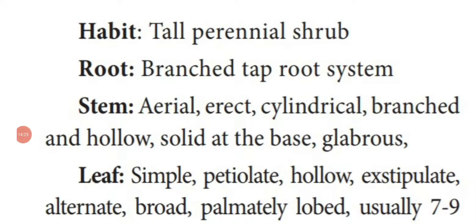Habit: It is a tall perennial — that is more than 2 years lifespan — shrub plant. Root: taproot system, because it is a dicot family. Stem: aerial, above the ground level, erect, cylindrical in shape, contains many branches. The stem is hollow — meaning not thick — they have a cavity at the center, but at the base of the stem it is very solid or thick.